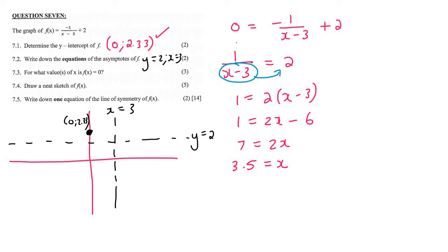And then the x-intercept is 3.5, which is probably around there, so that'll be (3.5, 0). Now it's very easy to draw the graph because we know the asymptotes, and the graph must always go very close to the asymptotes. So it does something like that, and then something like that.